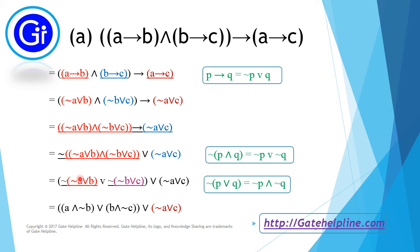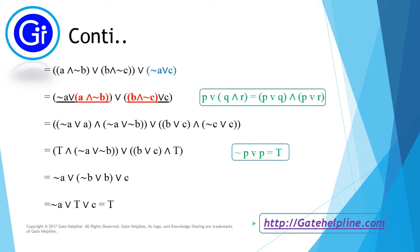We extract the red and purple underlined expressions using the formula ¬(P ∨ Q) = ¬P ∧ ¬Q, which results in this expression. Then we perform ORing of the blue expression with the rest of the expression, and the resultant we obtain is this expression.